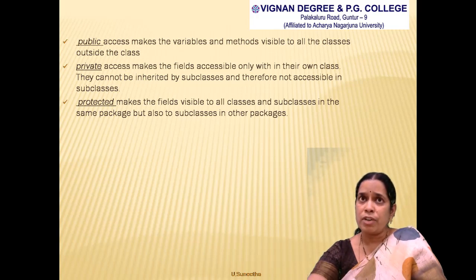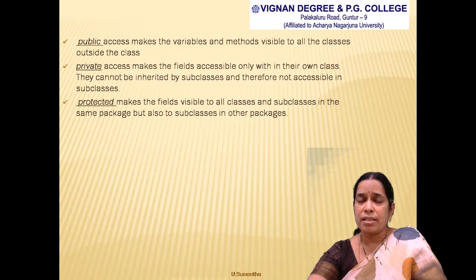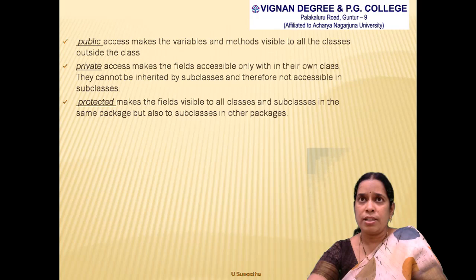The third access specifier is 'protected': variables and methods can be accessed within the class itself as well as by its subclasses, which can be in the same package or different packages. So 'protected' allows the class and its children to access the members. This concludes all the topics covered in this inheritance unit.